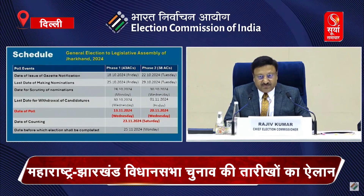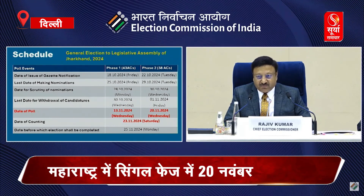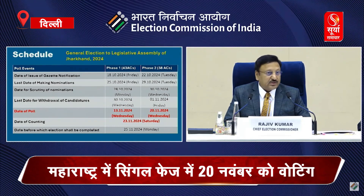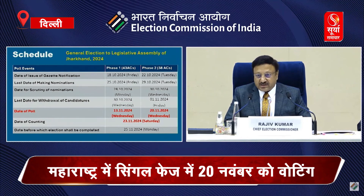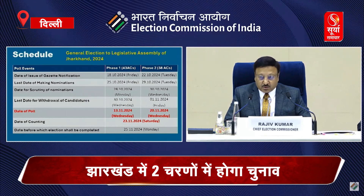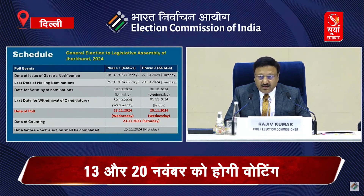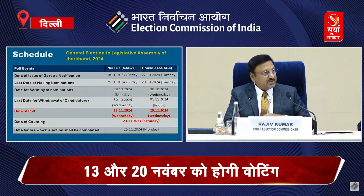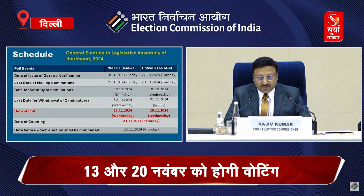So the date of issue of notification for Jharkhand: phase one would be 18th, and for phase two would be 22nd, along with Maharashtra. Nominations for phase one would be until 25th October, and for phase two, 29th. This slide we will share with everyone.